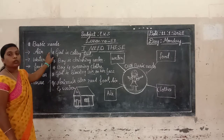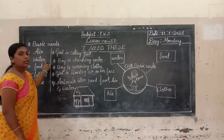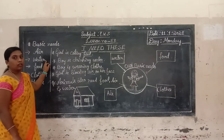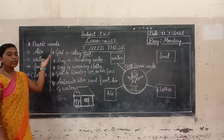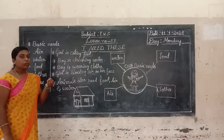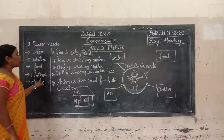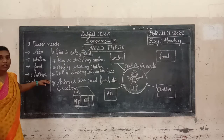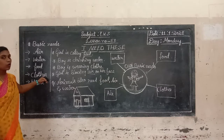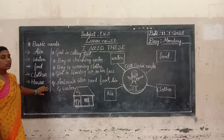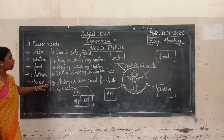We need air to breathe. We need water to drink — always drink clean and fresh water. We need food to eat — food helps our body grow. We should always eat good and fresh food. Clothes protect our body from heat of the sun, cold, wind, and rain. House also protects us from heat, cold, wind, and rain.